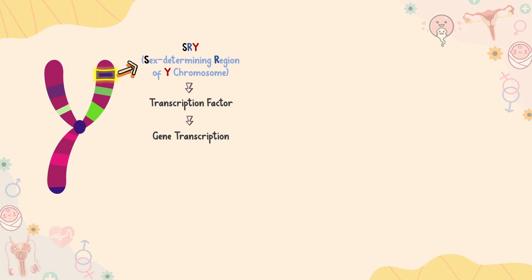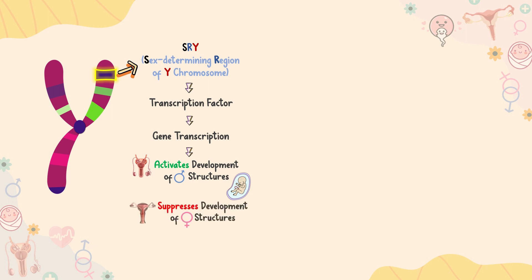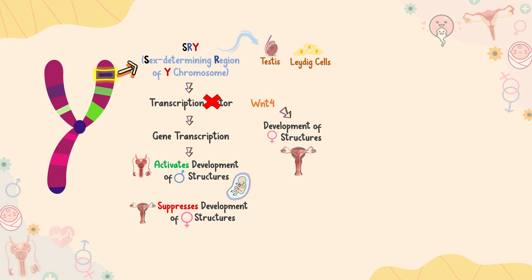SRY activates gene transcription, directing the development of male structures in an embryo, and also suppresses the formation of female structures. The absence of the SRY transcription factor, along with the expression of the gene called WNT4, causes the development of a female body to occur.